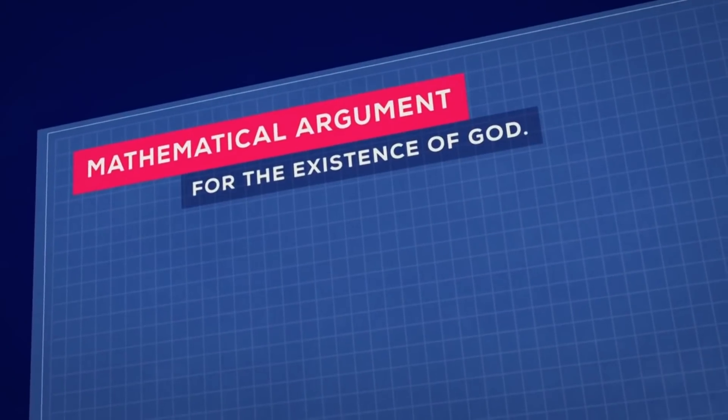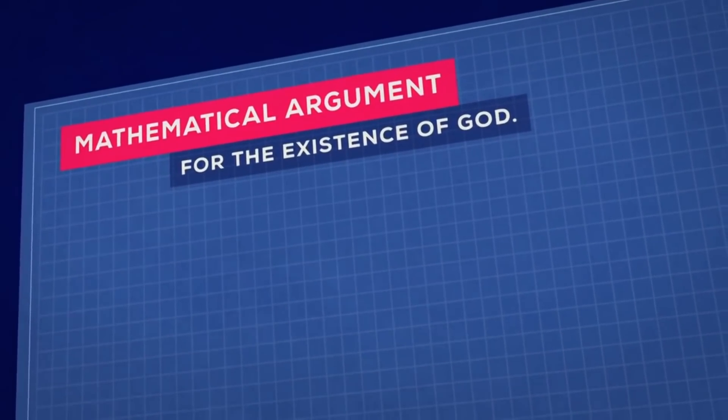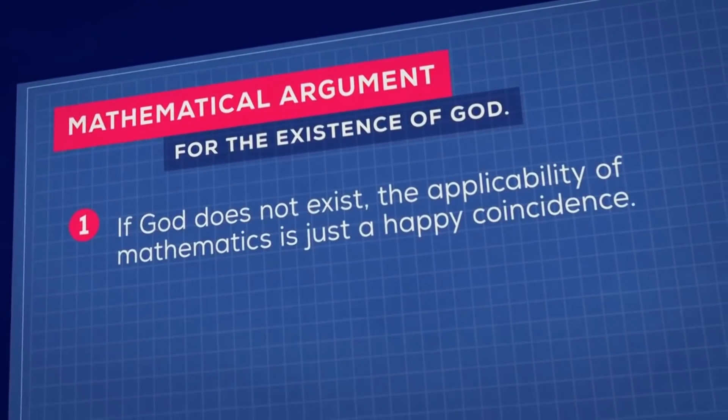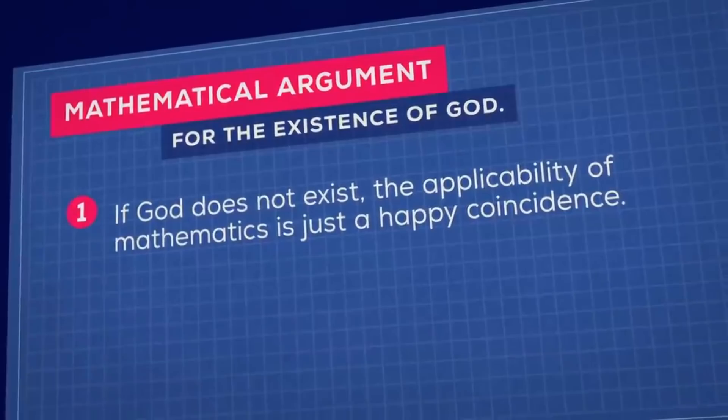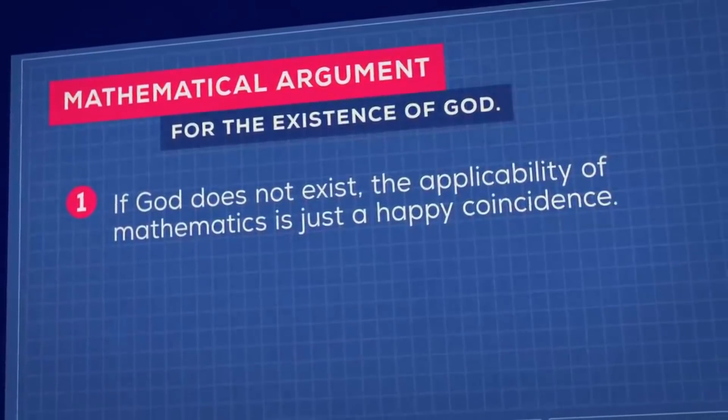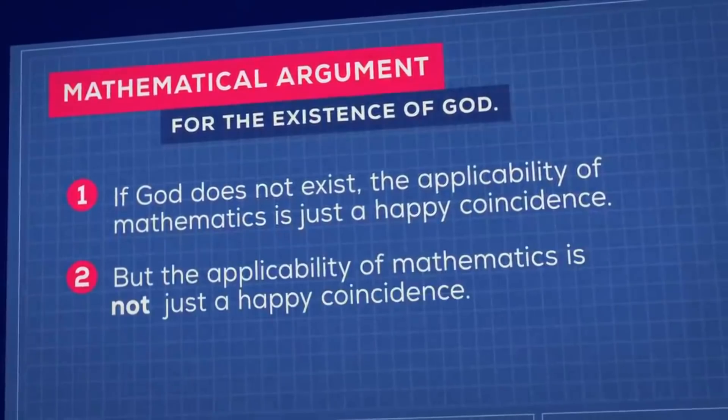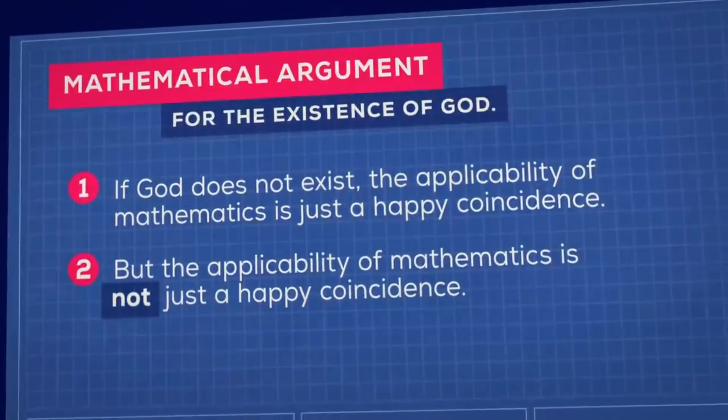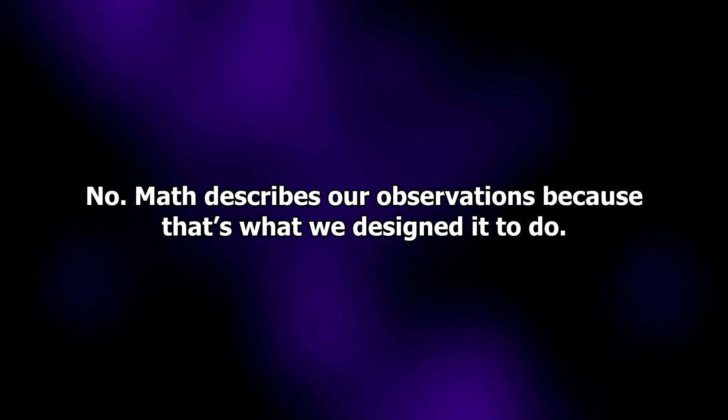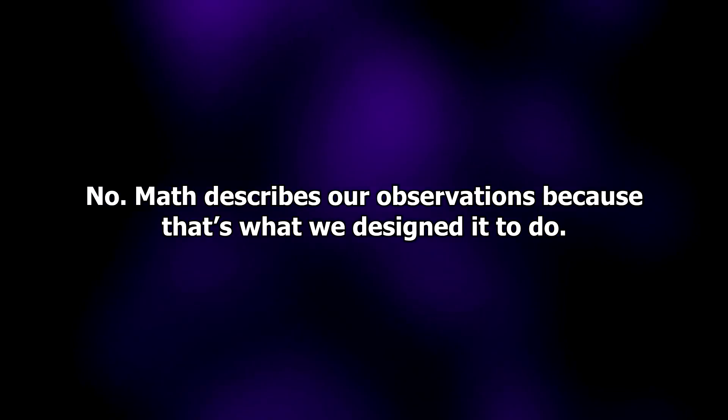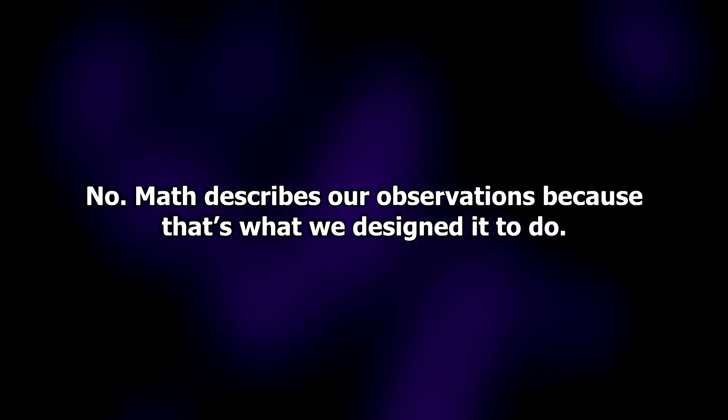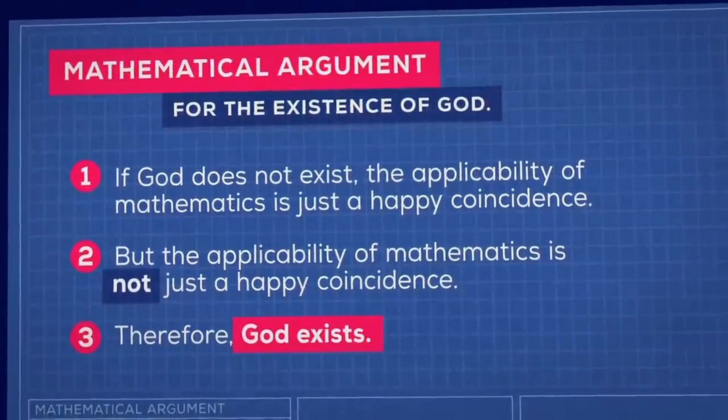All of this adds up to an argument for the existence of God that goes like this. If God does not exist, the applicability of mathematics is just a happy coincidence. As I've already explained, that's a false premise. But the applicability of mathematics is not just a happy coincidence. No, math describes our observations because that's what we designed it to do. Therefore, God exists.